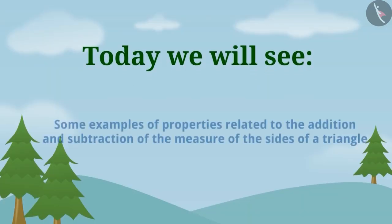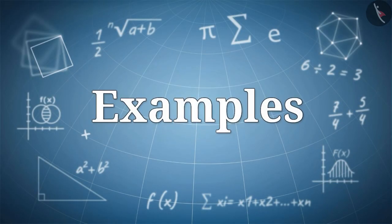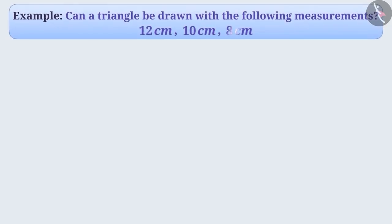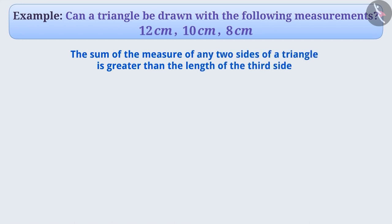Today we will see some examples of the properties related to the addition and subtraction of the measure of the sides of a triangle. Can a triangle be formed with the following measurements? We know that the sum of the measure of any two sides of a triangle is greater than the length of the third side. Let's use this understanding here.